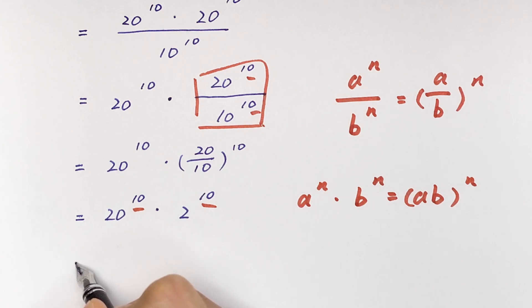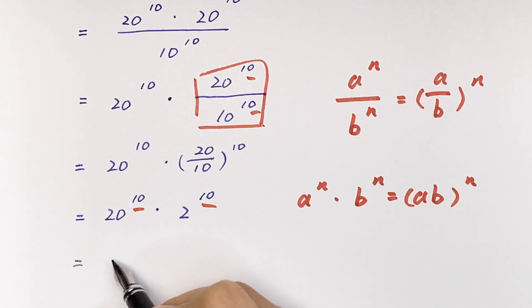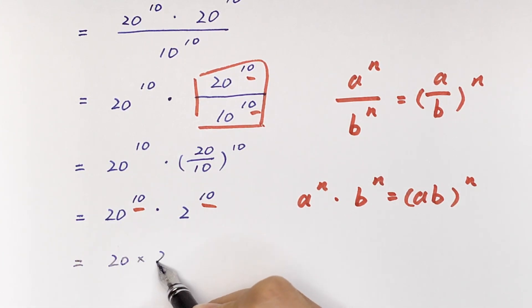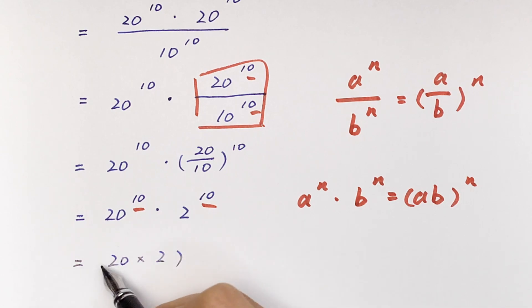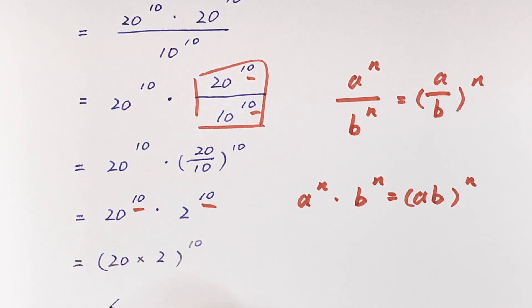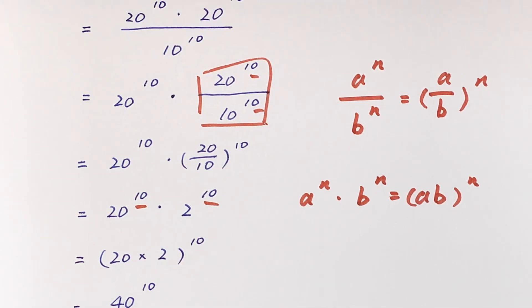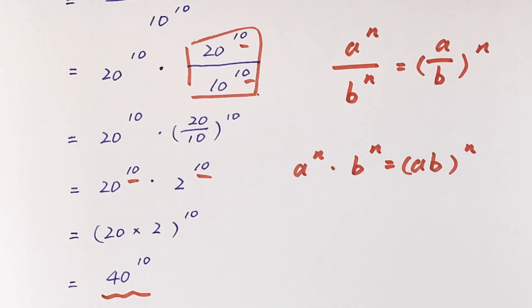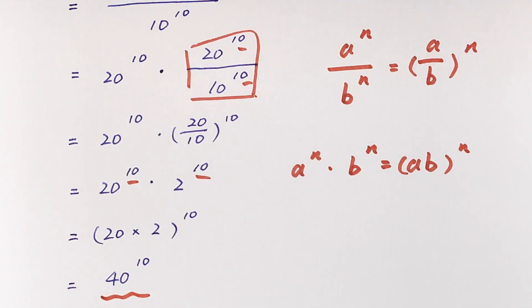So here it is equal to 20 times 2, in brackets, to the power of 10, which is equal to 40 to the power of 10. This is our final answer. Thank you for watching and see you in the next video, bye!